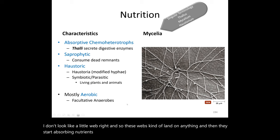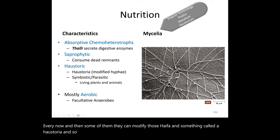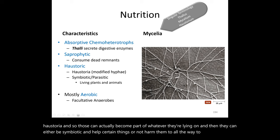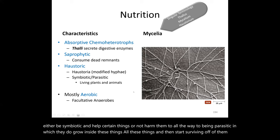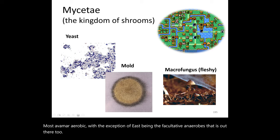These seven fungal divisions are: Microsporidia, Glomeromycota, Chytridiomycota, Blastocladiomycota, Neocallimastigomycota, Ascomycota, and Basidiomycota. Note that in mycology, 'division' is used instead of 'phylum,' but they mean the same thing taxonomically. They're classified primarily based on their spores and how they disperse and reproduce.